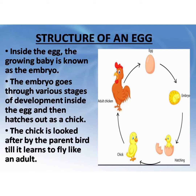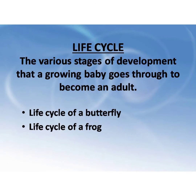The chick is looked after by the parent bird till it learns to fly like an adult. The various stages of development that a growing baby goes through to become an adult is called the life cycle of an animal. We will revise the life cycle of a butterfly and the life cycle of a frog.